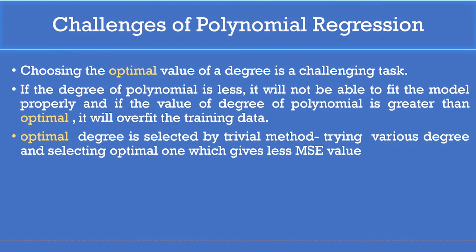Challenges of polynomial regression: Selecting the optimal value of the degree or order of the polynomial regression is challenging, which determines the accuracy of the model. If the degree of the polynomial is very less, the model will not be able to fit the data properly and will not provide accurate prediction. On the other hand, if the degree of the polynomial is greater than optimal, it may overfit the data, which will result in the failure of generalization.